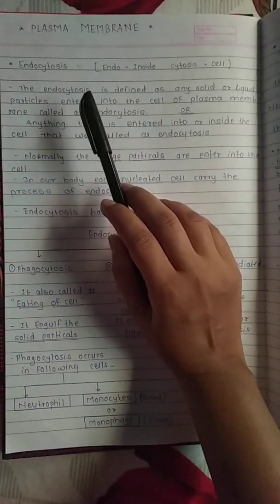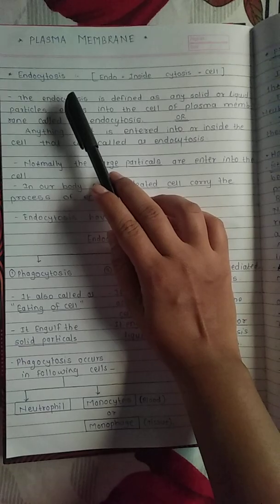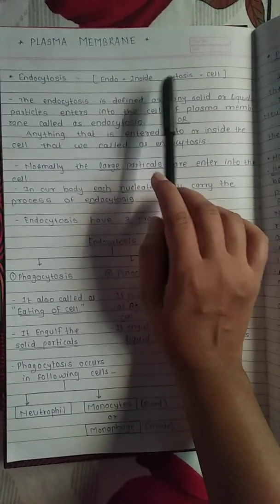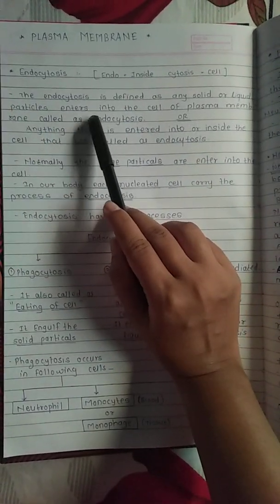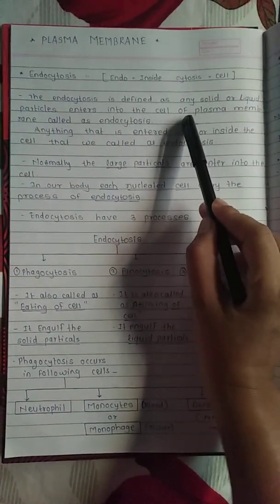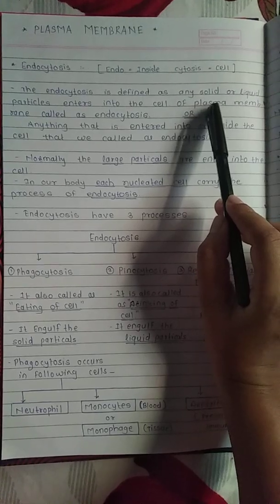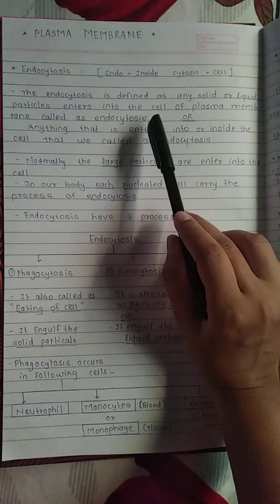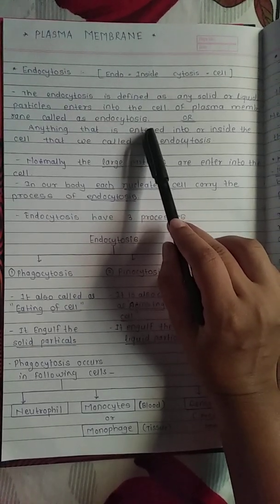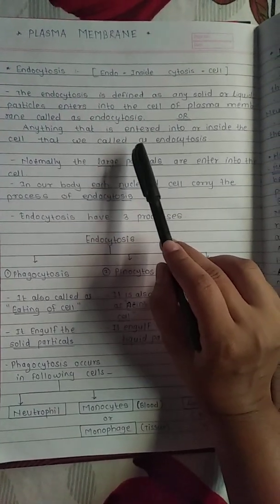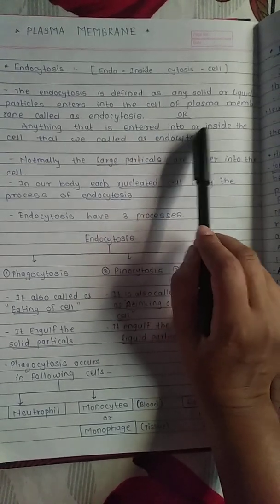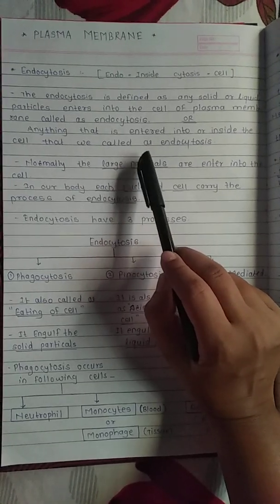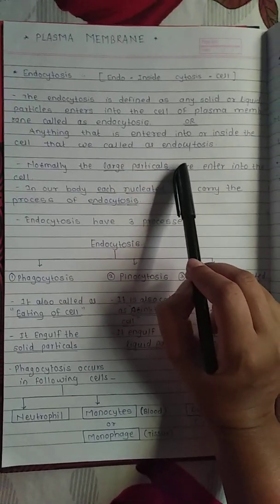Today we see endocytosis. Endo means inside and cytosis means cell. Endocytosis is defined as any solid or liquid particles that enter into the cell through the plasma membrane — anything that enters inside the cell is called endocytosis.